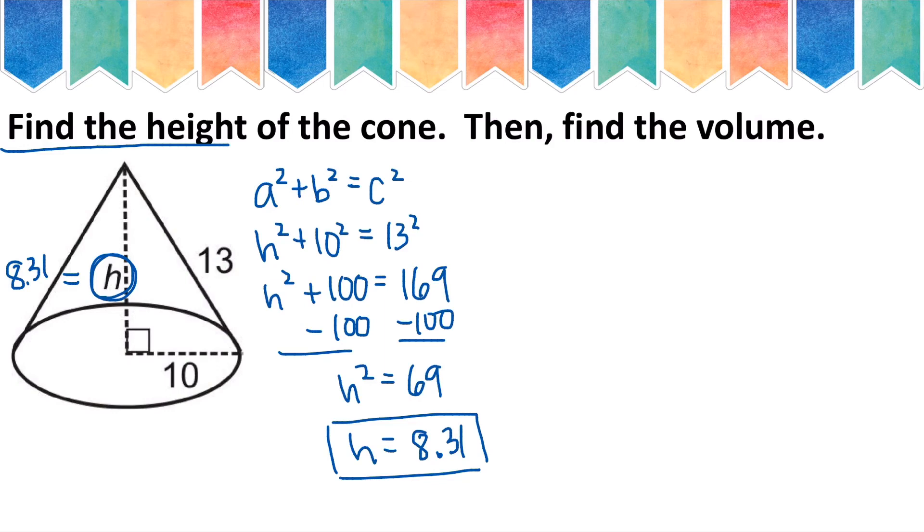Now our directions ask us to find the volume. So remember, the formula for the volume of a cone is 1 third pi r squared times h. And remember that this h stands for height, not slant height. So when I calculate the volume, I do not use the 13, because the 13 is my slant height. Instead, I will use 8.31.